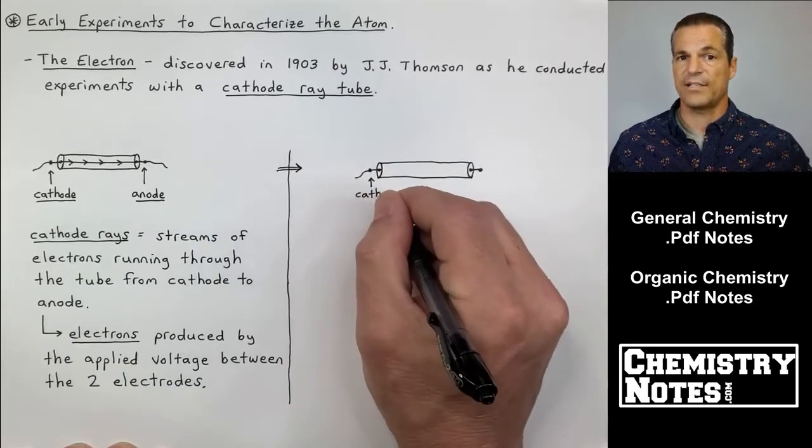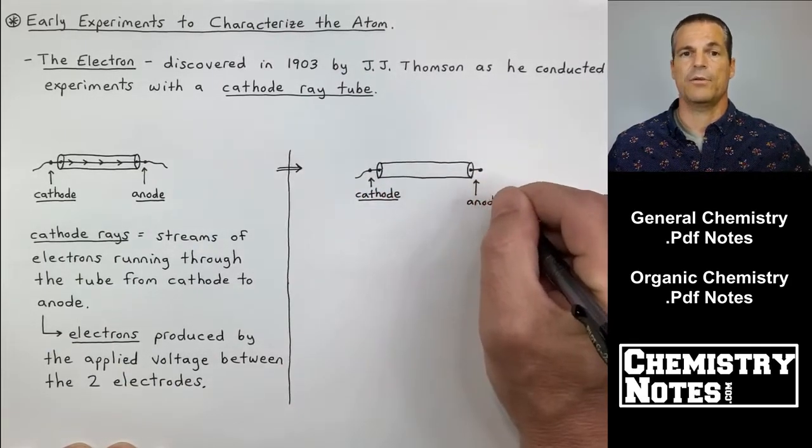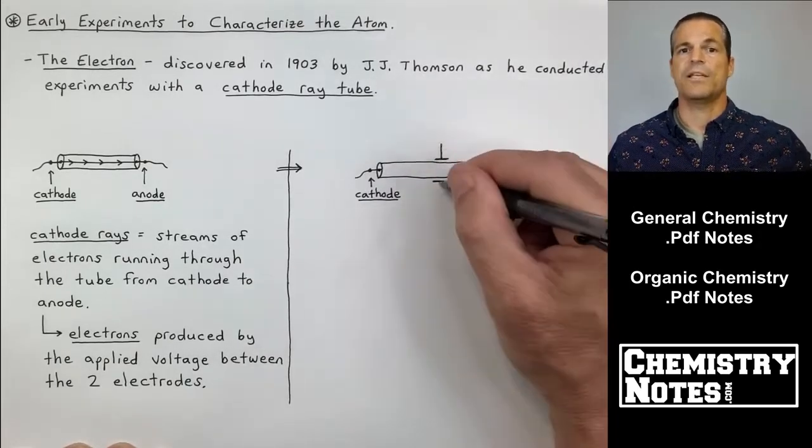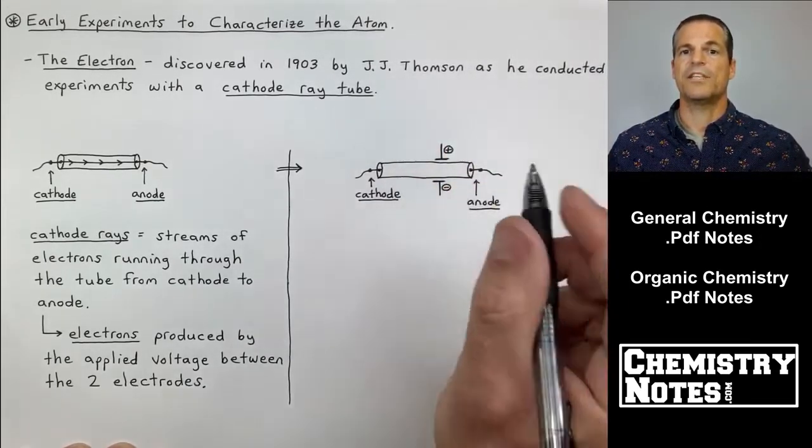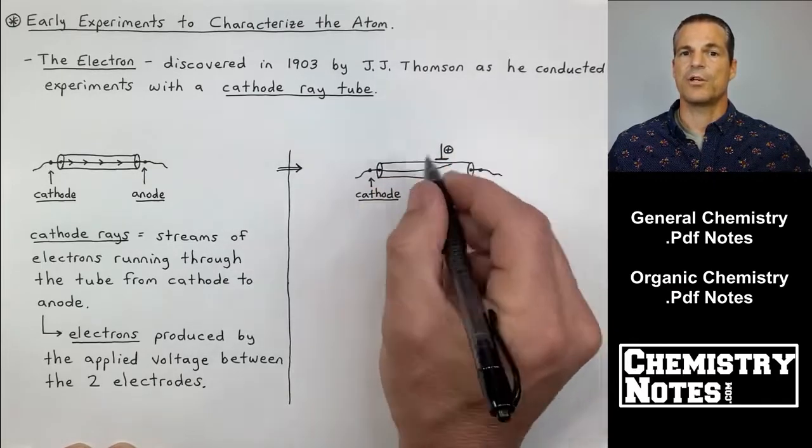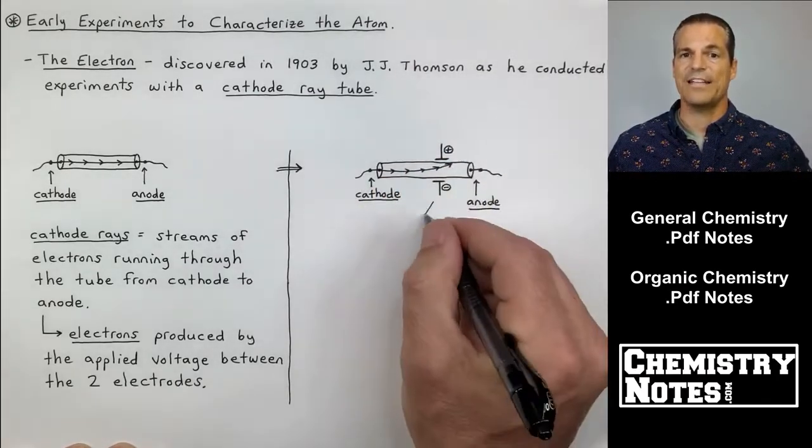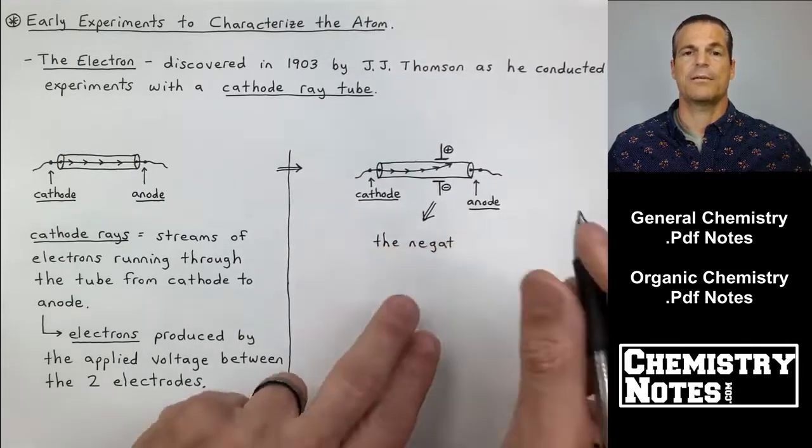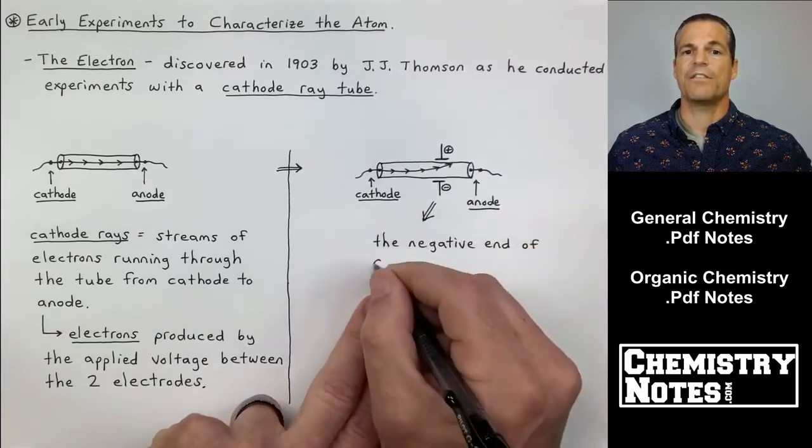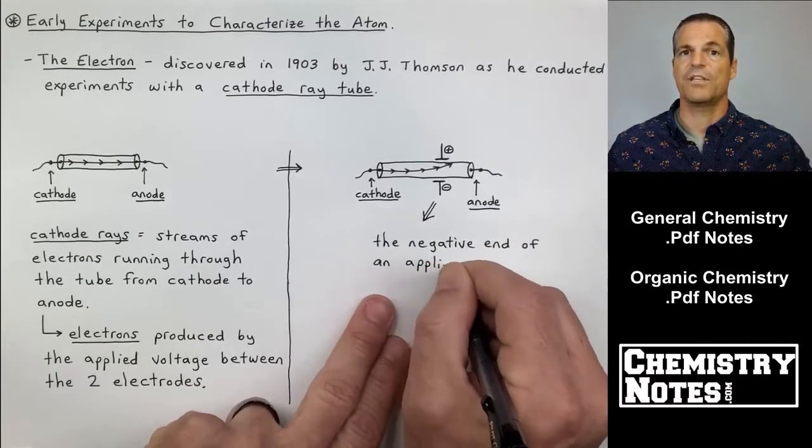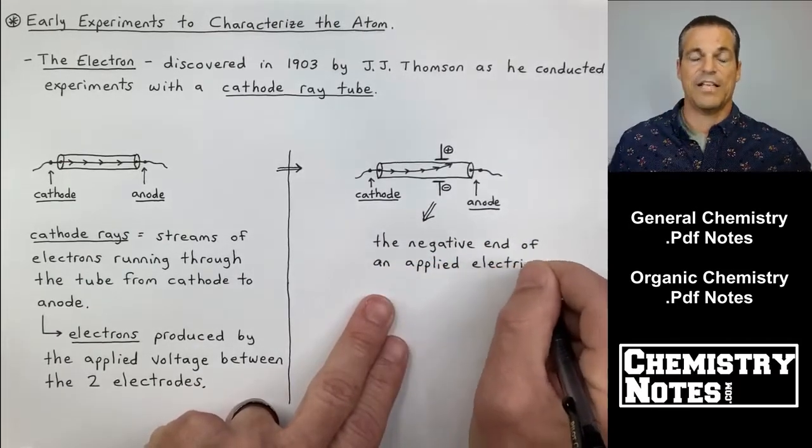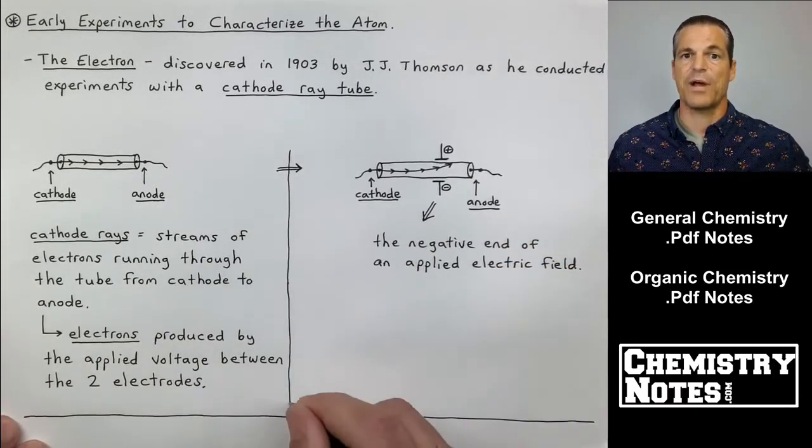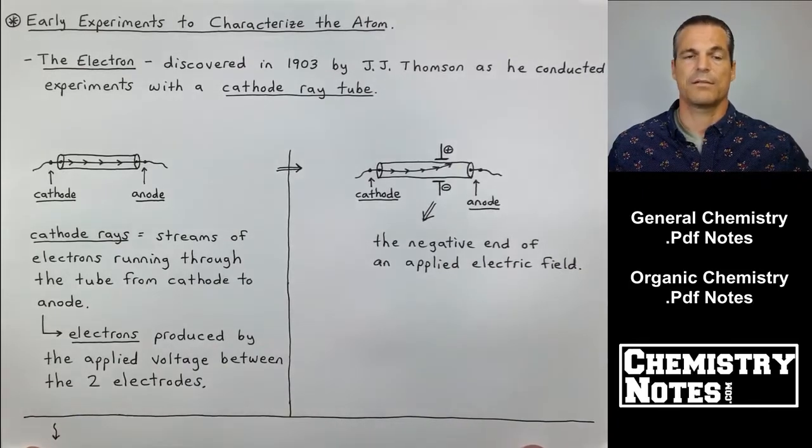On the left-hand side we just have a regular cathode ray tube. Electrons are moving from cathode to anode in a straight line produced by the applied voltage between those two electrodes. On the right-hand side I'm redrawing my cathode ray tube. Cathode is the electrode on the left, anode is my electrode on the right. The electrons are being attracted to the positive end of this electric field. The negative end of the applied electric field is repelling electrons away from it, or you could say that the positive end is attracting electrons towards it.